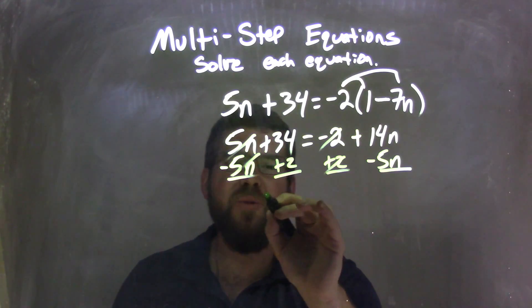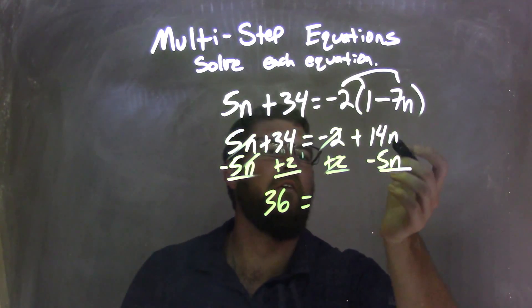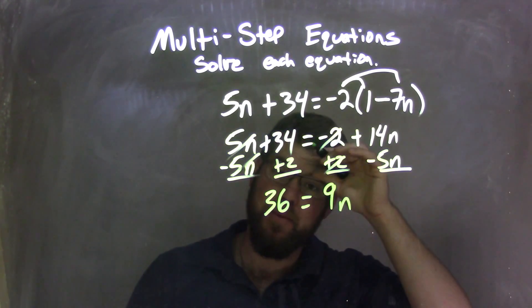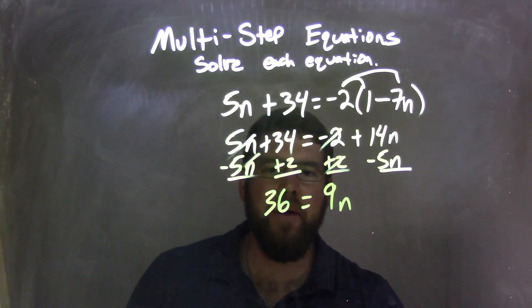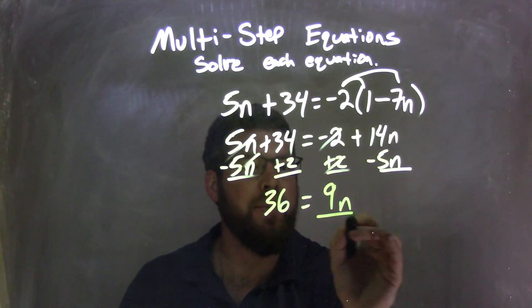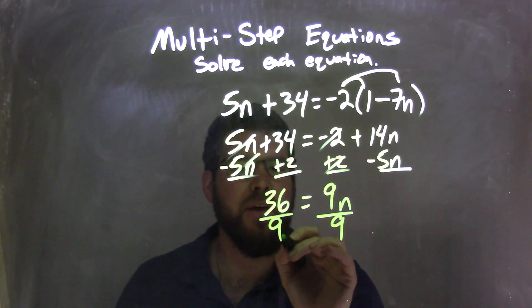We're going to look at 34 plus 2, which is 36, equals 14n minus 5n, which is just 9n, okay? Well, now we have 36 equals 9n. We have to divide by 9 to both sides, leaving me, well, it's 36 divided by 9, it's 4.